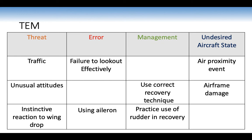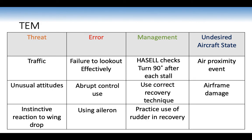The three main threats in this lesson: traffic — the error will be failing to look out effectively, undesired aircraft state will be air proximity; unusual attitudes — manage using correct recovery technique, undesired aircraft state is airframe damage, the error being abrupt control input or not using correct technique; instinctive reaction to wing drop — the error will be using ailerons, management will be practised use of correct recovery technique, and the undesired aircraft state will be incipient spin. So make sure you use rudder to recover.